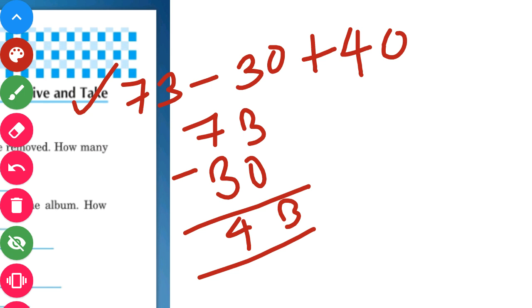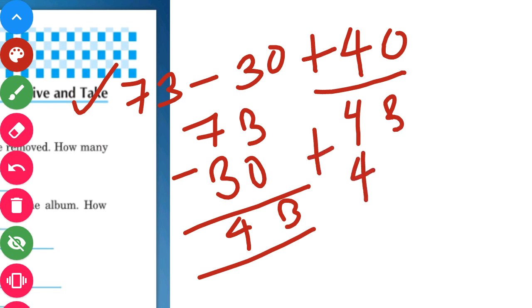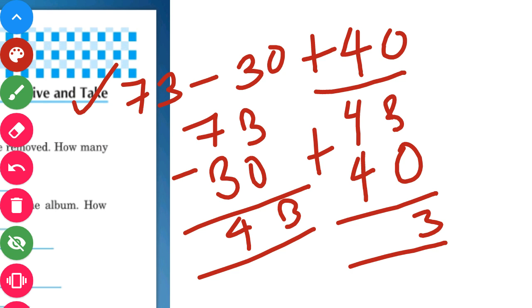We got 43 by subtracting 30 from 73. Now we will add 40 to that. 43 plus 40 — 3 plus 0 gives us 3, and 4 plus 4 gives us 8. So our answer is 83.